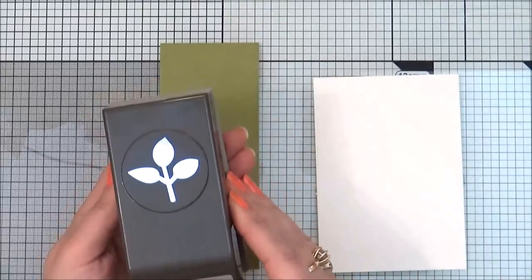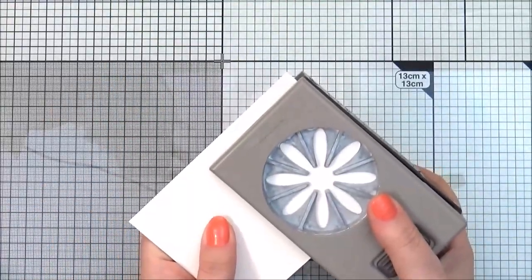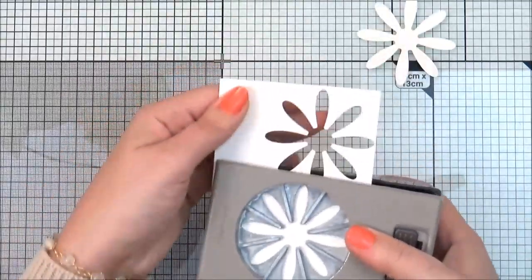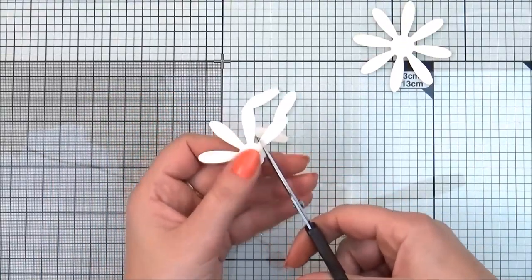And now I'm gonna take the leaf punch and I'm gonna punch two leaves. And I'm gonna take the daisy punch and we need to punch two daisies. And now we have to take scissors and cut off the petals.